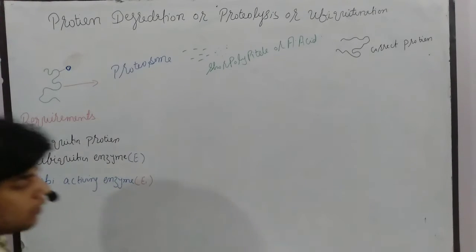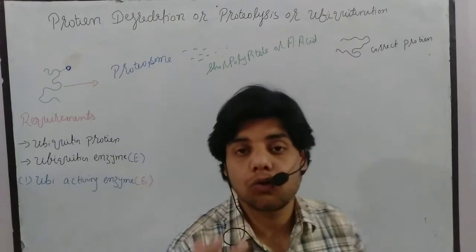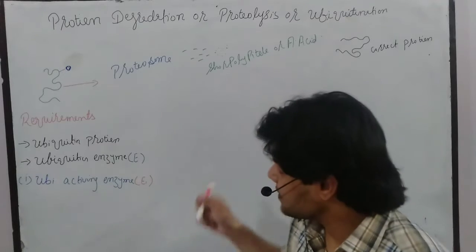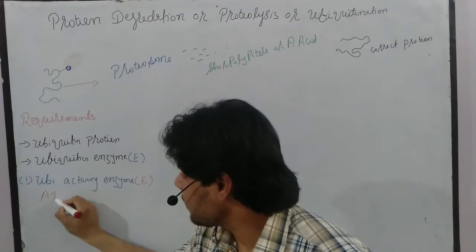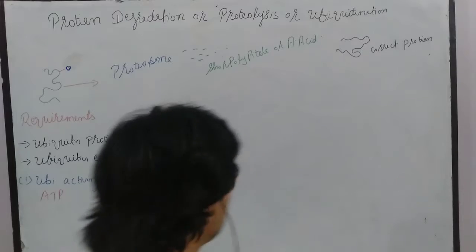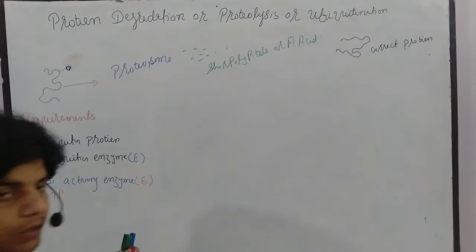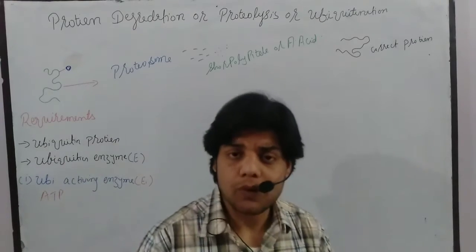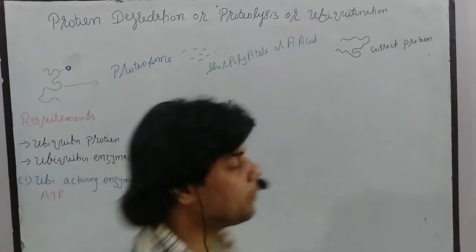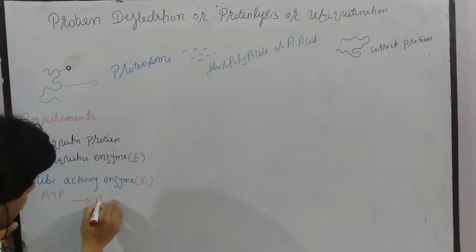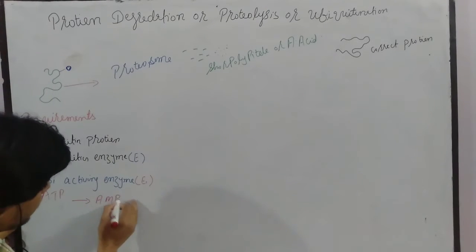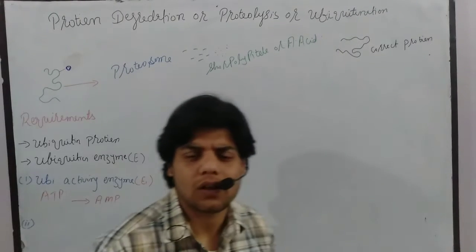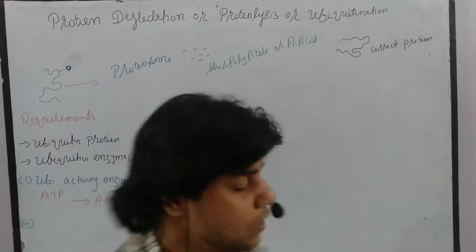E1, the ubiquitin activating enzyme, activates the ubiquitin. It is an ATP-dependent enzyme — it requires ATP for binding to ubiquitin. The ATP is then converted into adenosine monophosphate (AMP), which releases energy. This enzyme is solely required for ubiquitin activation.